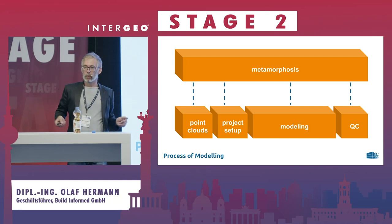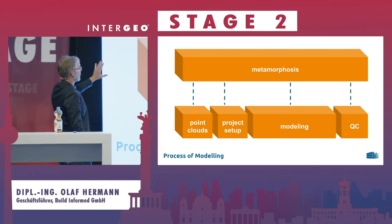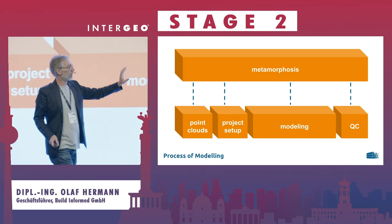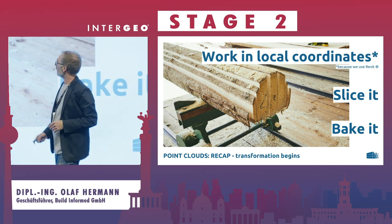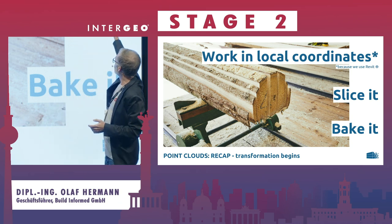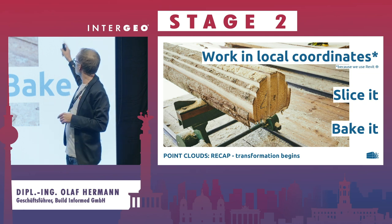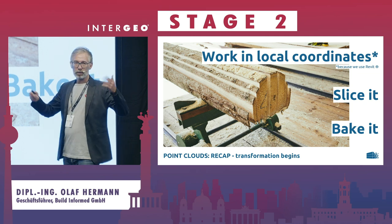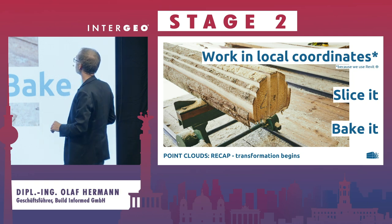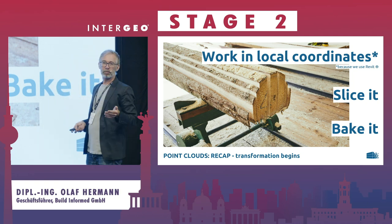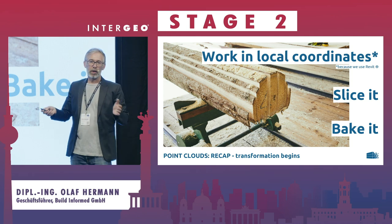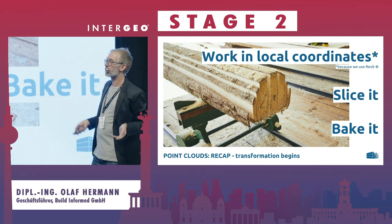Now we come to the point of how we make these models — I'll show you the steps. First, we get point clouds, we transfer them, we make a setup, then we model, and at the end we have the quality check. We shift the point cloud into local coordinates — we use Revit, that's important. We tried to work in georeferenced systems; it was a nightmare — stuff was shifting. We always go to the local system. Then we slice it, for example by stories or by districts, and we merge it together because we don't need multiple scans. One subsampled cloud is enough to bring into Revit.